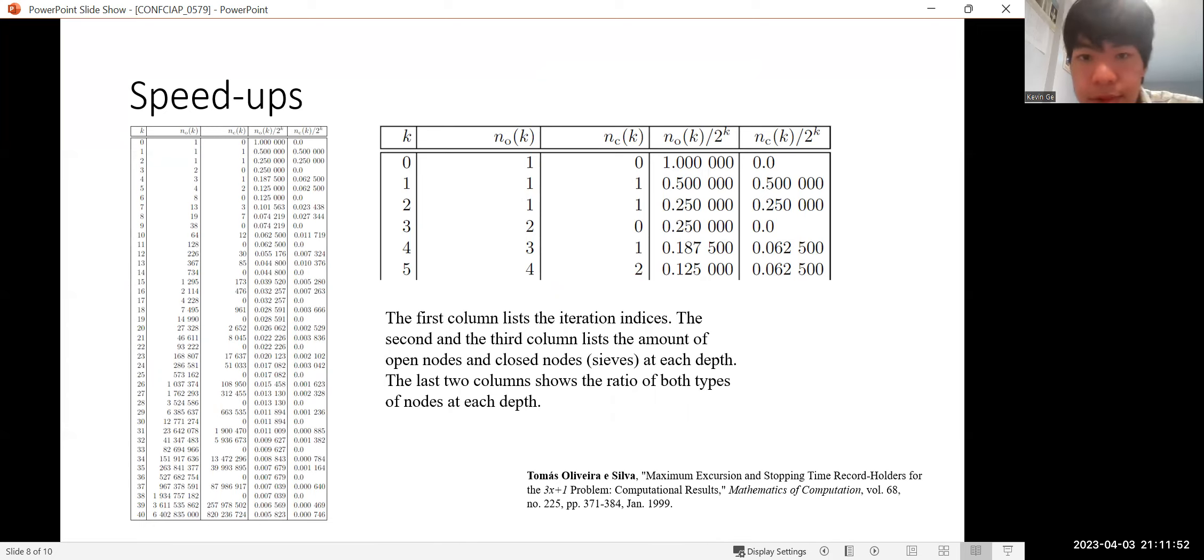And the next two columns represent the ratio of each. So what we're really concerned with is the fourth column, o over 2 to the power of k, because this represents the percentage of numbers we need to test at each tree depth level. So for example, at the 0th level, we have to test 100% of the numbers. At the first level, we only have to test 50% of the numbers, because we can recall that we don't have to test even numbers. And it reduces half of the testing cases. And similarly, by the way, up to at the 5th level, we have to test only 12.5% of the numbers.